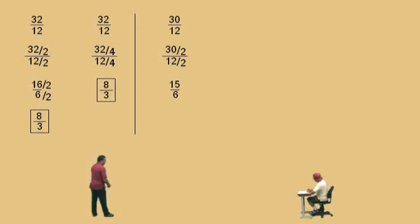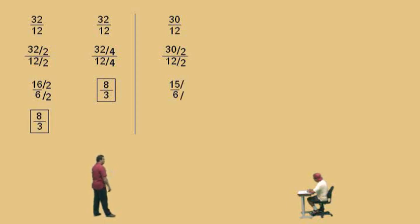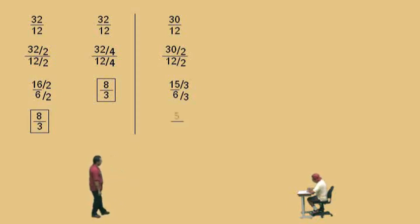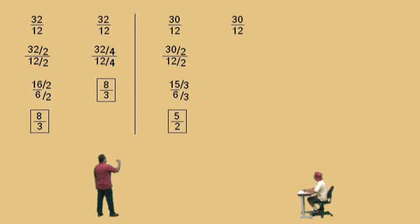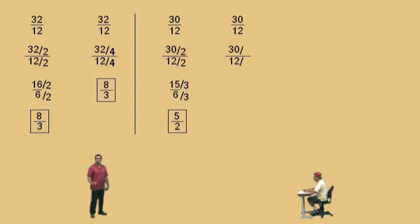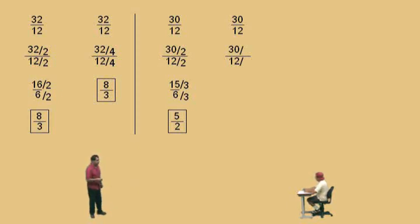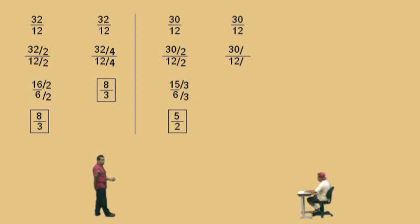Now, a fifteen and a six — Charlie, is fifteen divisible by two? Nope, no it's not. But we can divide top and the bottom by what number, Charlie? Three, because three divides evenly into both those. What's fifteen divided by three? Five. And six divided by three? Two. Very nice there, Charlie. Now, notice — same problem. We divided by a two, and then we divided by three. Some of you may be asking: could we have first started off by dividing top and bottom by three? Yes, you could have. You'll always end up at five halves, no matter how you approach this problem.